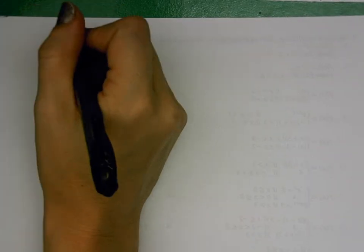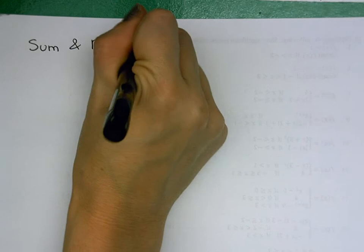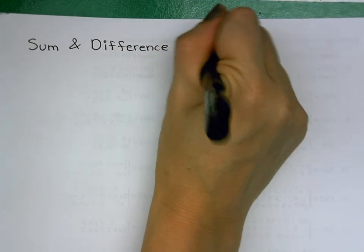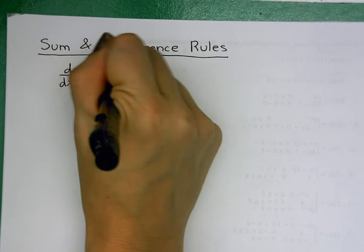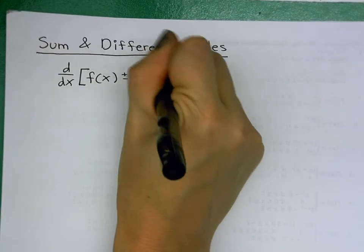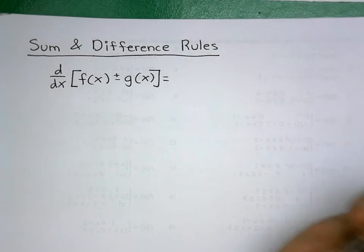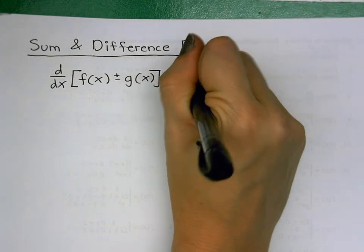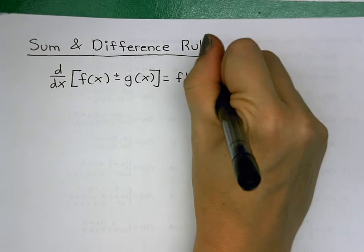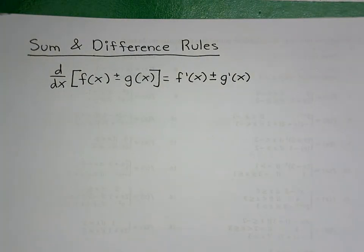We've got our sum and difference rules. We use these anytime we have two functions added or subtracted from each other. As long as there's a plus or minus between functions — not multiply or divide, which have their own rules — we can take the derivative of each term one at a time; they have no impact on each other.